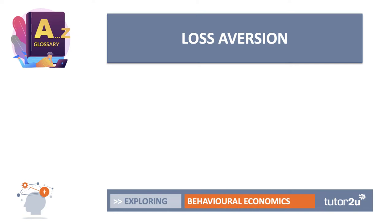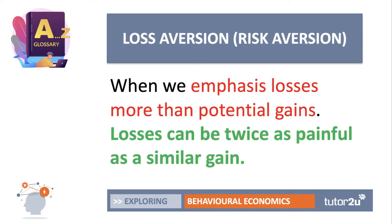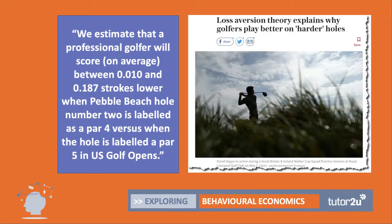Loss aversion is another important bias. Loss aversion happens when we emphasise losses more than potential gains — losses can in fact be twice as painful as a similar gain. In an interesting experiment, it was found that professional golfers, on average, score lower on a hole when it's labelled as a par four versus when the hole is labelled as a par five. Golfers tend to play better and sink more putts on harder holes because they feel the pain of a bogey more than the pain of a lost birdie or making par.